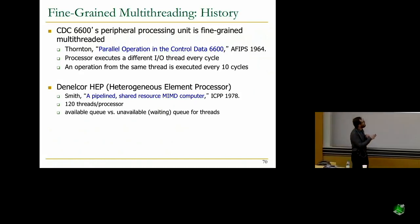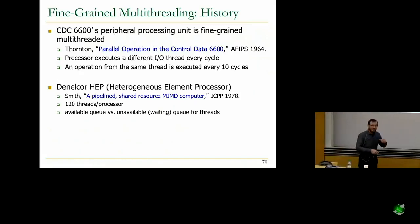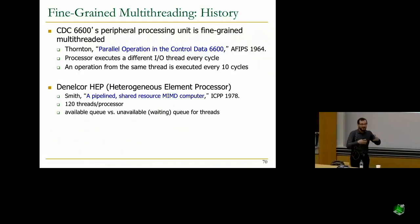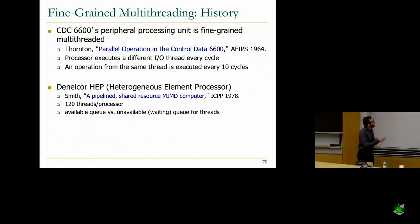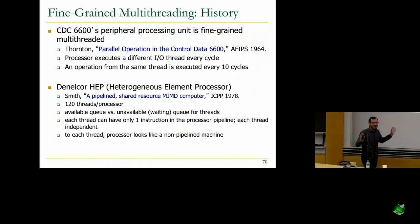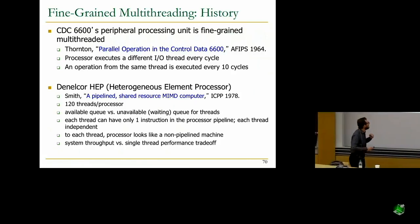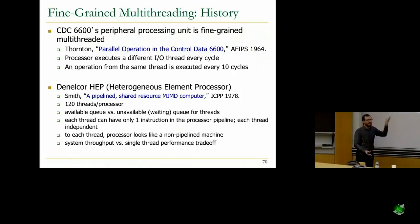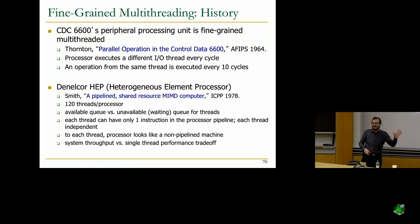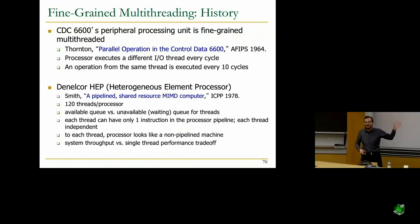There are queues for available threads and unavailable threads. Some threads exit the pipeline because they're waiting for data; you can then fetch from other threads. Each thread can have only one instruction in the processor pipeline, and each thread is independent. To each thread, the processor just looks like a non-pipelined machine — you're fetching an instruction every N cycles. So there's a huge trade-off between system throughput versus single-thread performance. If you have only a single thread to execute, this is not going to buy you any performance.